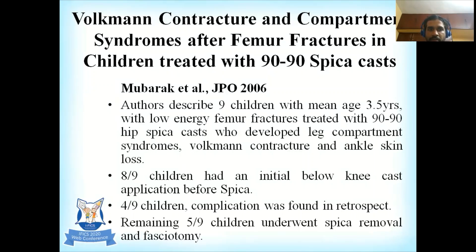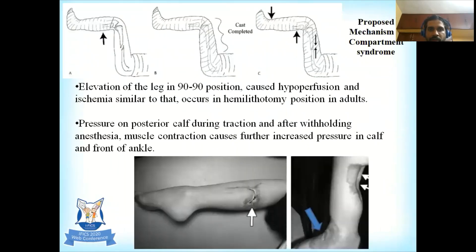In four of the nine children, the complications were found in retrospect; the remaining five underwent immediate spica removal and fasciotomy. The proposed mechanism of compartment syndrome includes elevation of the leg in the 90-90 position causing hypoperfusion and ischemia, similar to the lithotomy position in adults, and pressure on the posterior calf during traction. After withholding anesthesia, muscle contraction causes further increase in pressure in the calf and front of the ankle, as seen in the pictorial representation and clinical pictures.